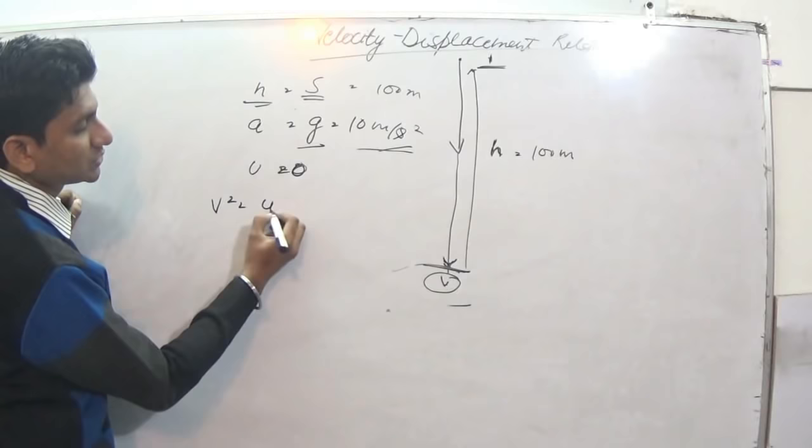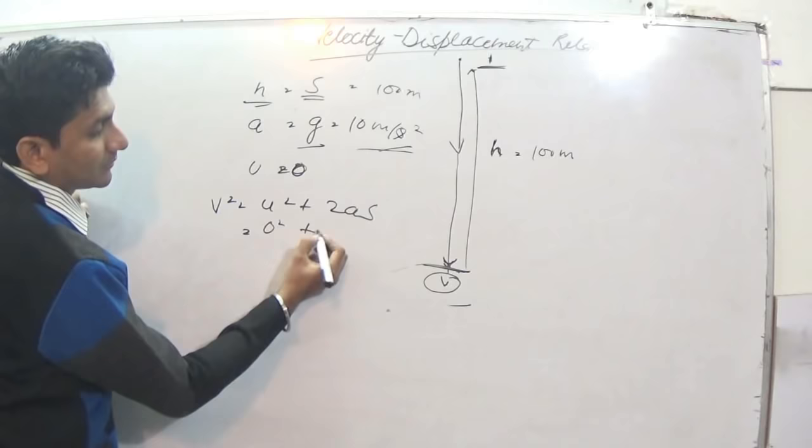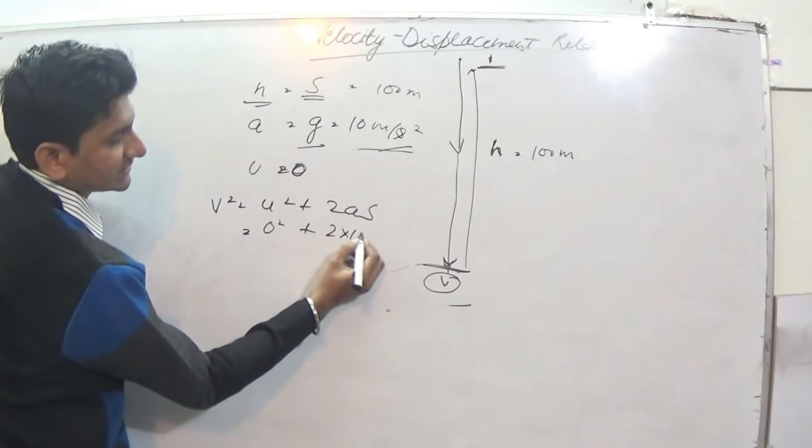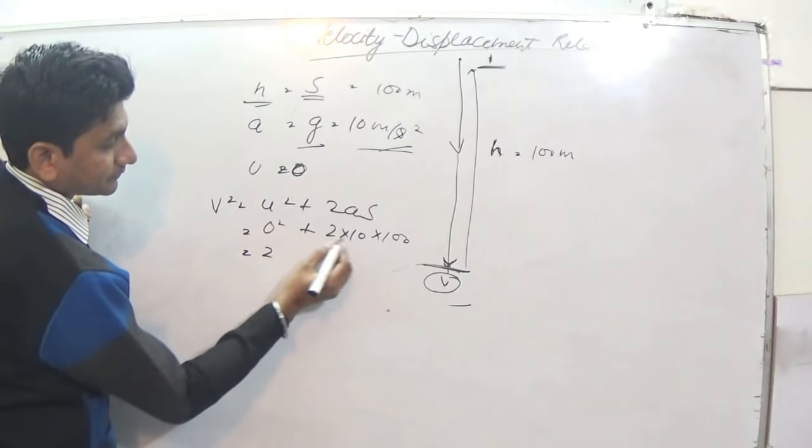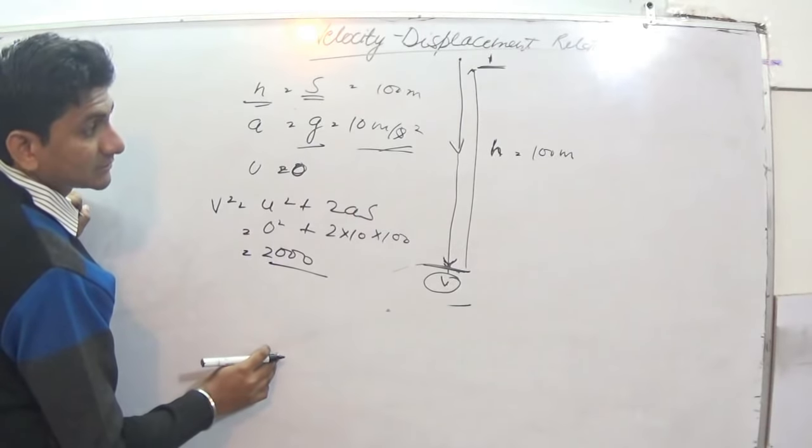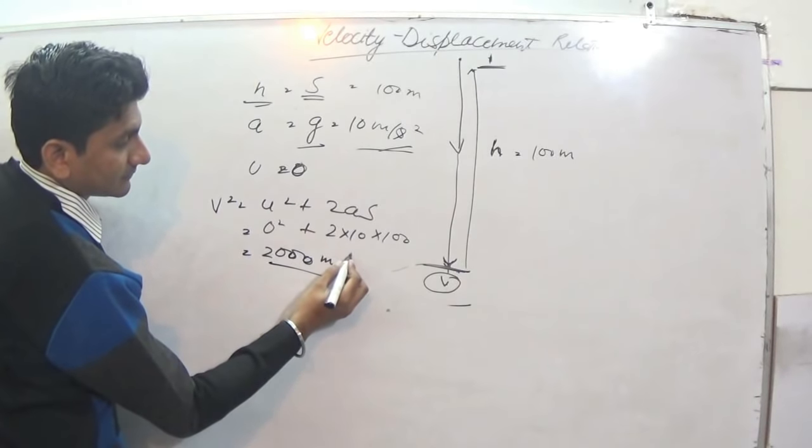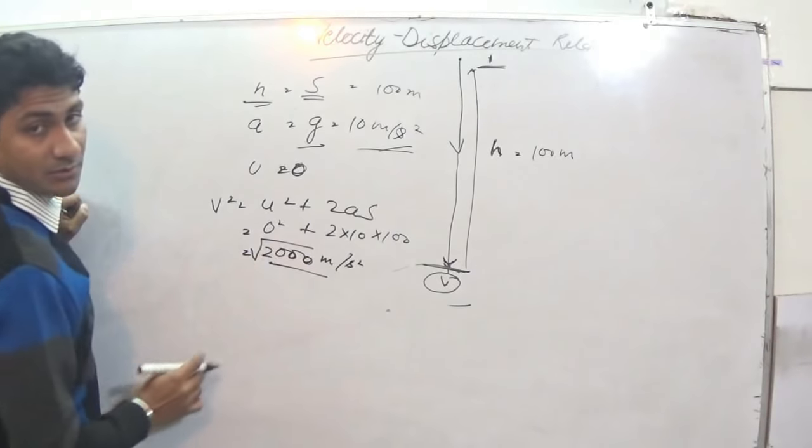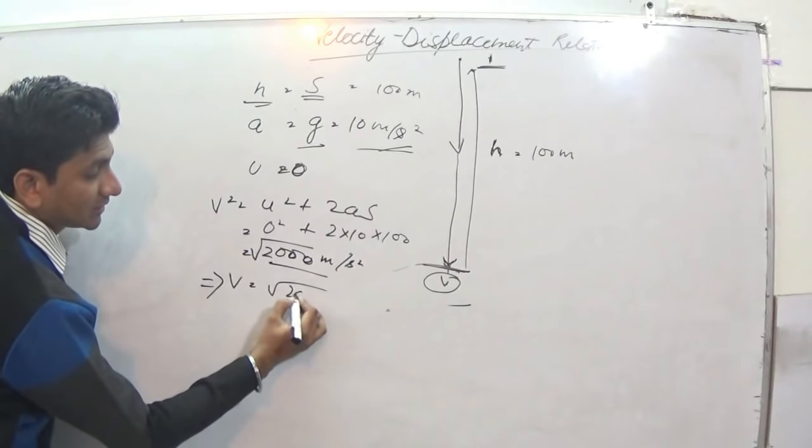What will be v? v square is equal to u square plus 2as is equal to 0 square plus 2 multiplied by g, that is 10, multiplied by s, that is 100. It is equal to 2000 m per second square, under the root. Implies v is equal to under the root 2000.